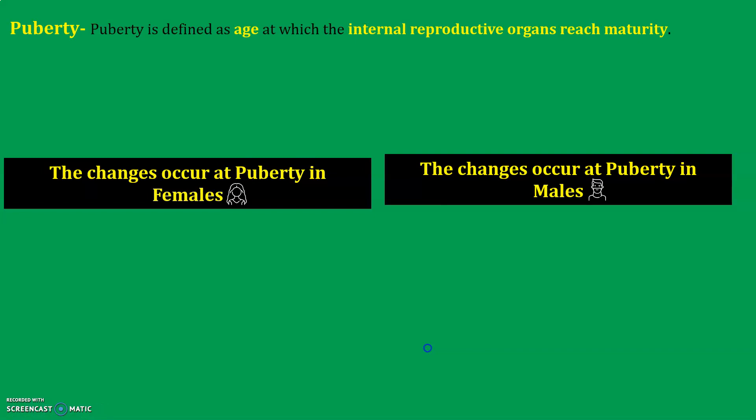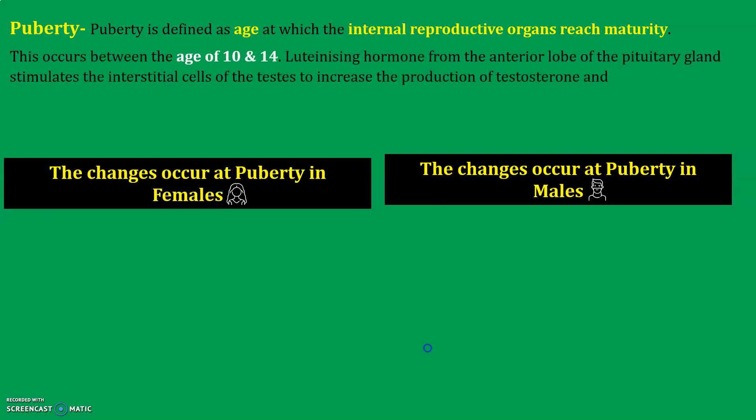What is puberty? Puberty is the age at which the internal reproductive organs reach maturity — between ages 10 to 14. What happens is that luteinizing hormone from the anterior lobe of the pituitary gland stimulates the production of sex hormones: the male testes release testosterone, and the female ovaries release progesterone and estrogens.